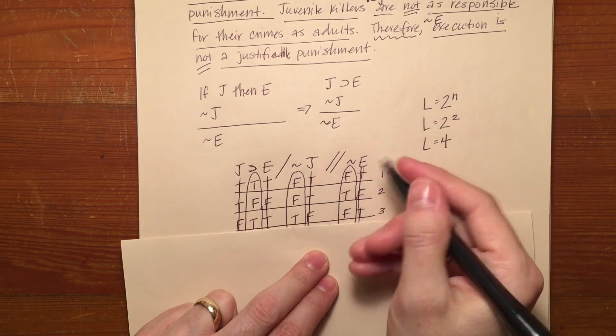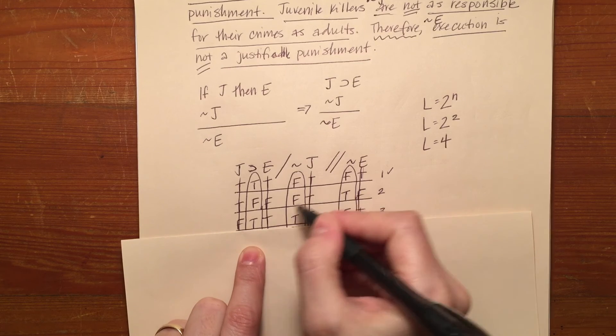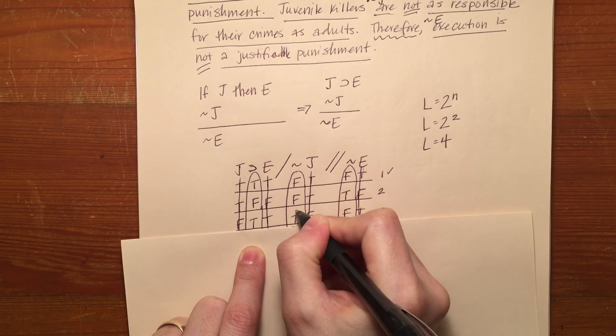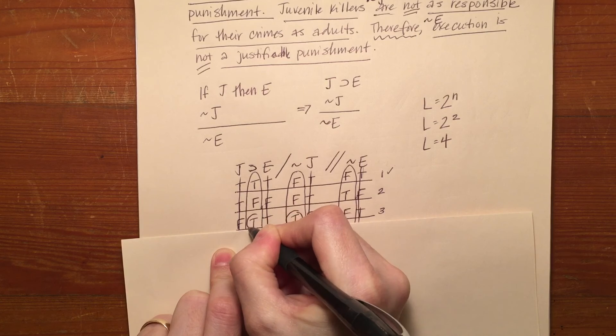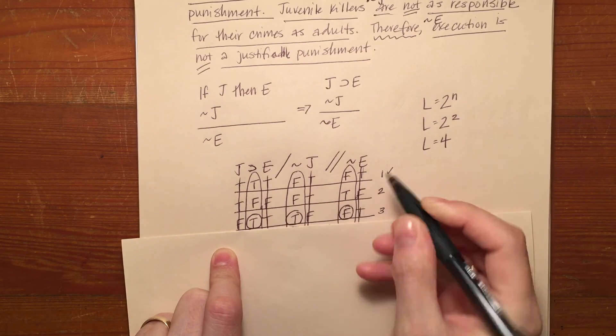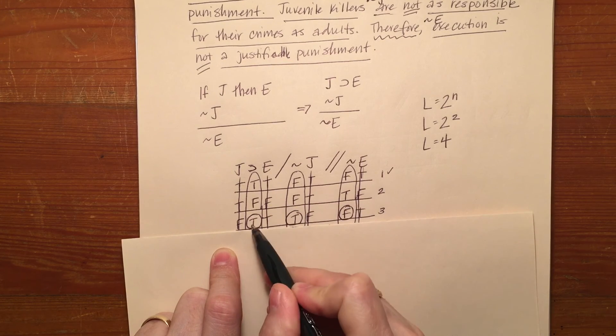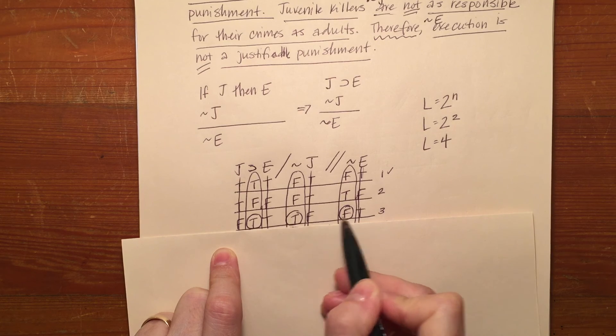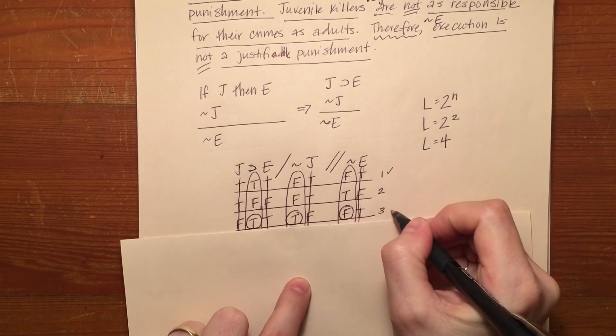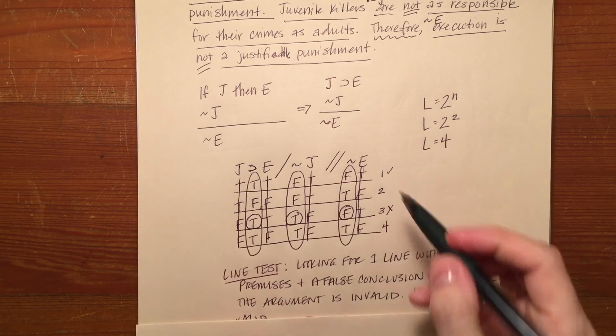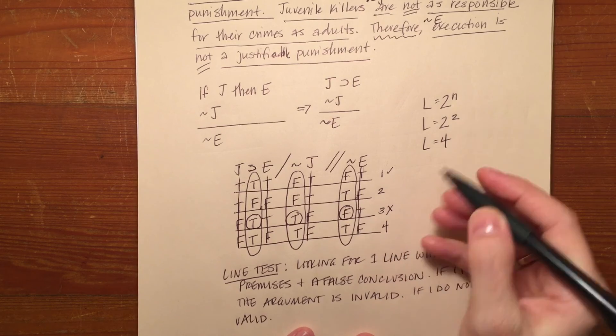Line three has a false conclusion and if I look back the answer for my second premise is true and the answer for my first premise is true. So here we've got a line where there's a false conclusion and all true premises. So here is where this argument fails the line test.